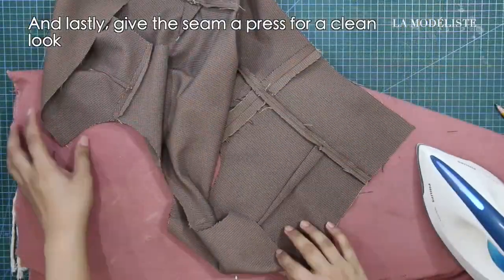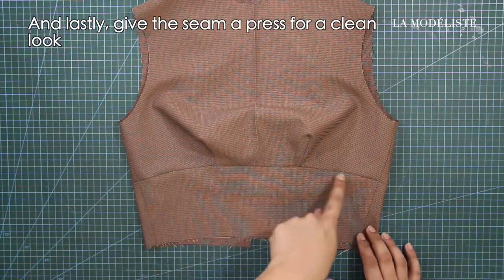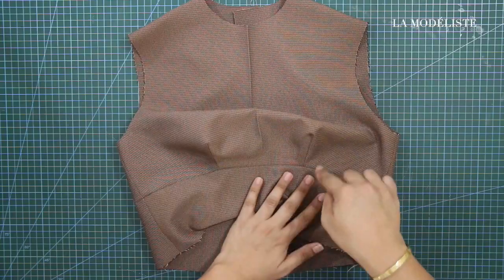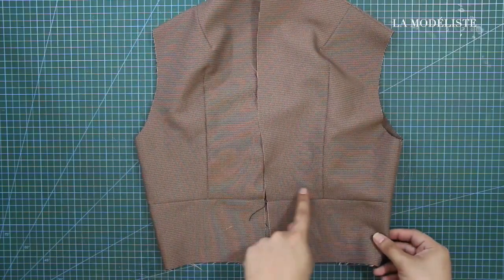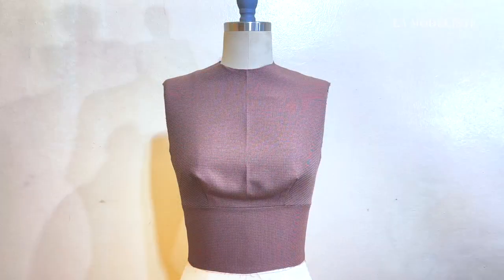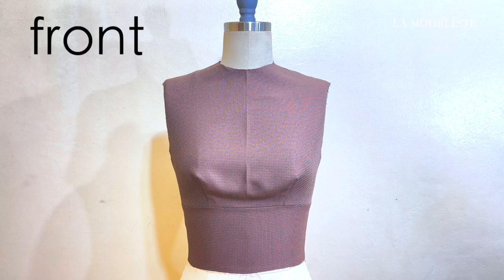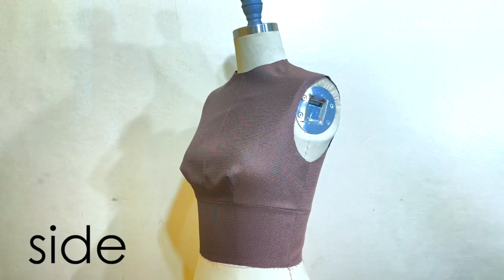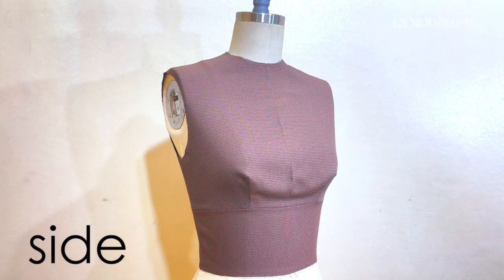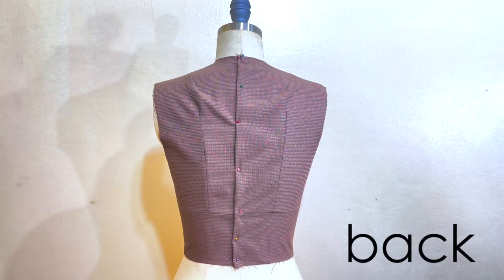And lastly, give the seam a press for a clean look. And voila! So this is my mock-up for the classic empire waist or bodice. This is the front part. These are the sides. And this is the back part.